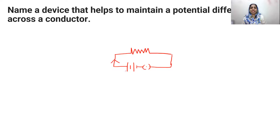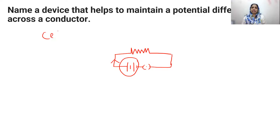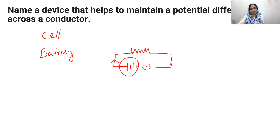A potential difference is required to maintain current flowing through the conductor. The battery is the combination of cells. So, the device that helps to maintain potential difference across a conductor is a cell or a battery.